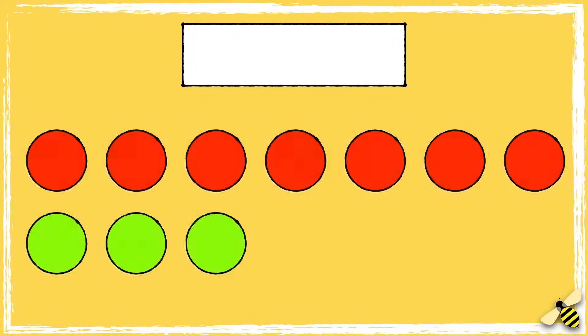Let's have a look at another example. Here are some more counters. There are seven red counters and three green counters.